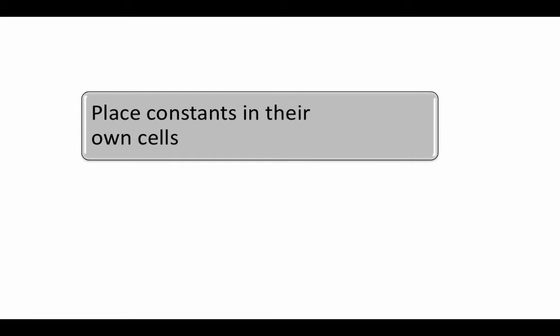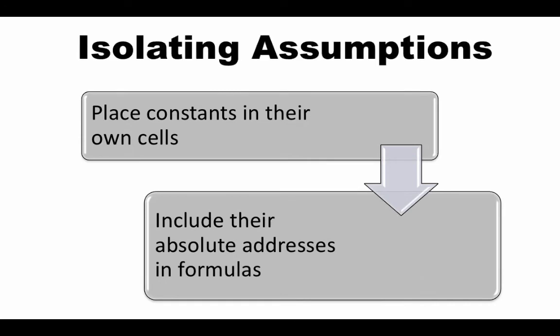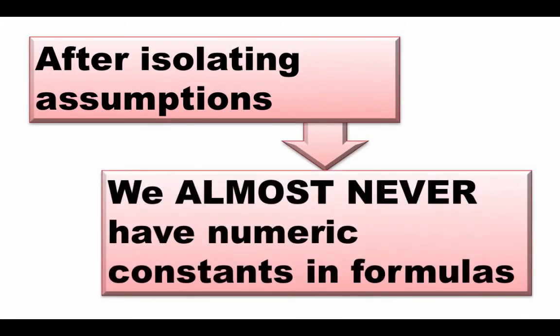So, in order to isolate assumptions, we place constants or assumptions in their own cells and include their absolute addresses in formulas. That's the essence of isolating assumptions. This is exactly what we did in our prior examples. So, after isolating your assumptions, you will see that your spreadsheets almost never have numeric constants in formulas.